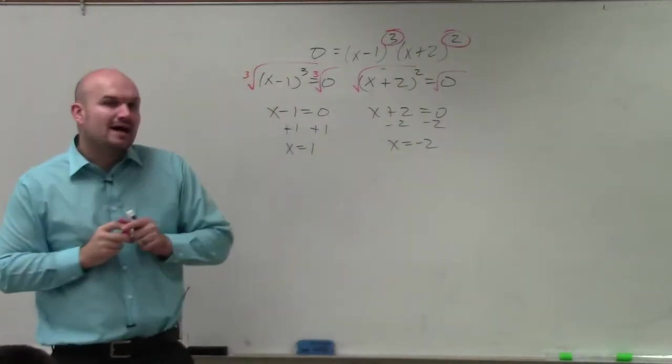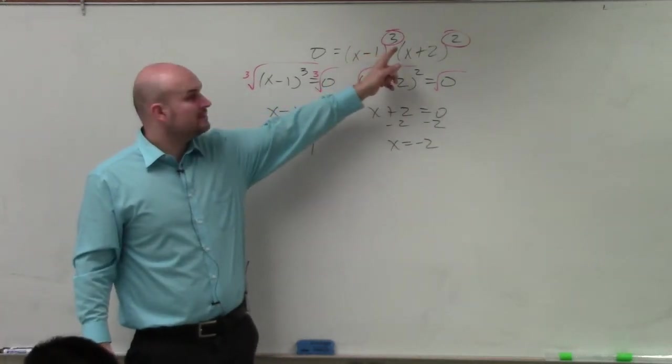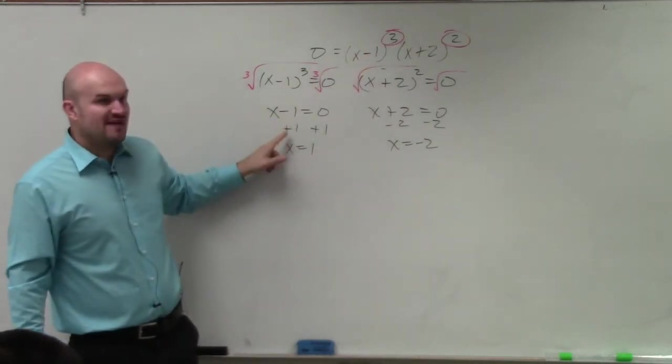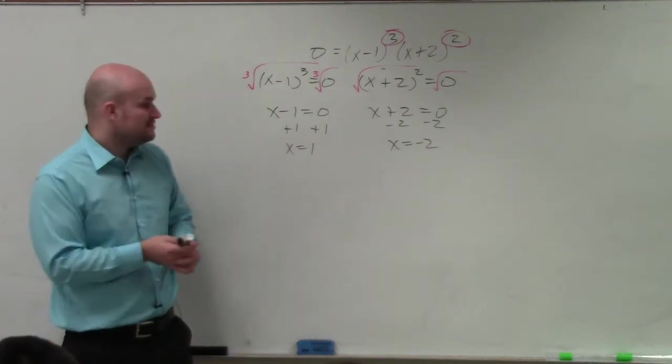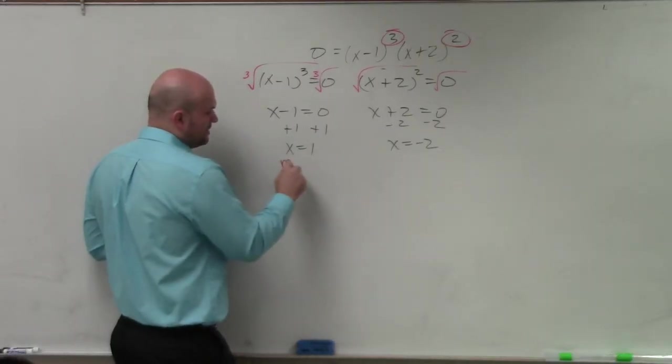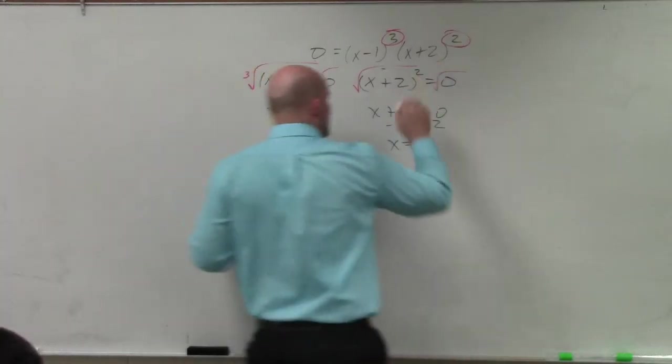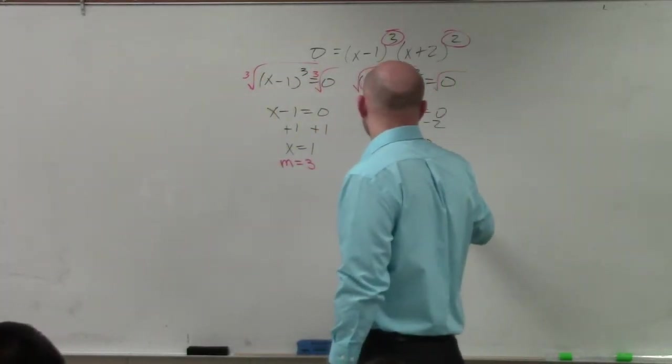While that 3, please be very careful, while that 3 does not affect the value of the zero, it does affect the graph. That is what we call multiplicity. The multiplicity of my zero at x = 1 is equal to 3. The multiplicity of my zero at x = -2 is equal to 2.